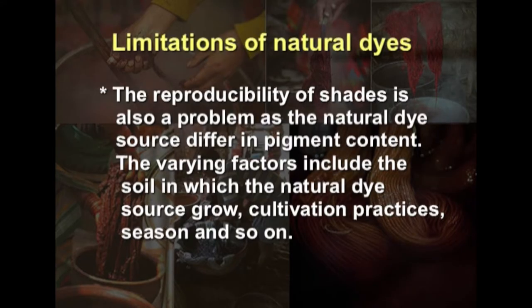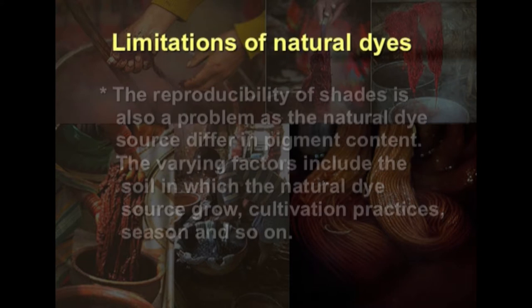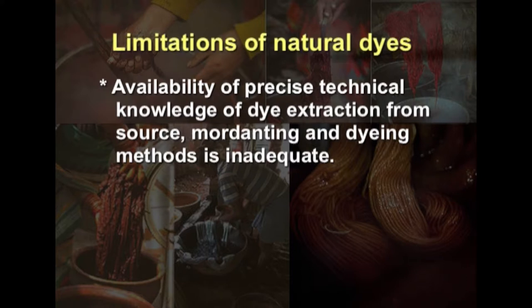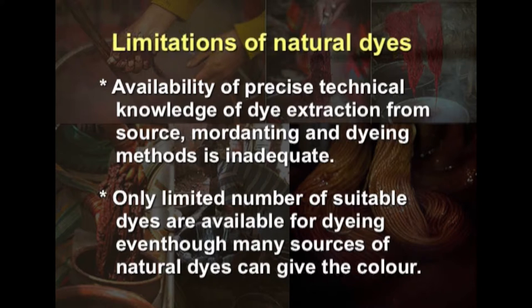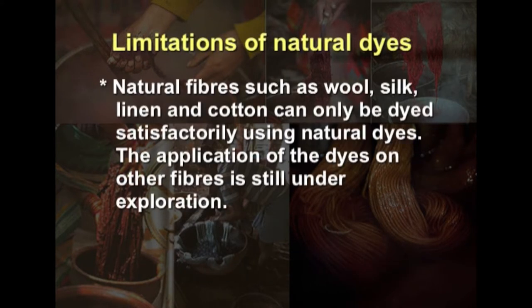The reproducibility of shades is also a problem, as the natural dye source differs in pigment content. The varying factors include the soil in which the dye source grows, cultivation practices, and the season. Availability of precise technical knowledge of dye extraction, mordanting, and dyeing methods is inadequate. Only a limited number of suitable dyes are available for dyeing. Natural fibers such as wool, silk, linen, and cotton can only be dyed satisfactorily using natural dyes; application on other fibers is still under research and needs standardization.